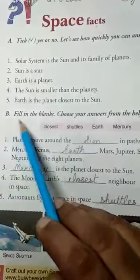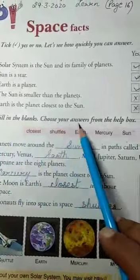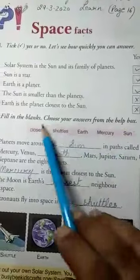Moving on to exercise B: Fill in the blanks. Choose your answers from the help box. This is the help box given and you have to choose the answers from here.